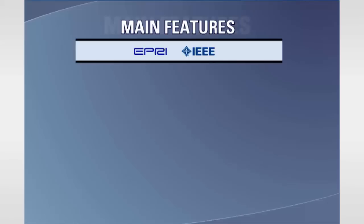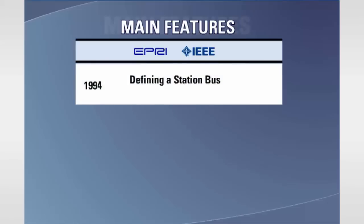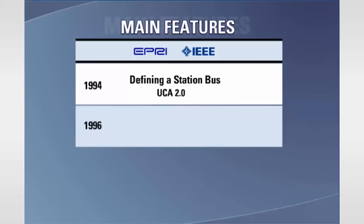From 1994 forward in North America, the EPRI and the IEEE started the task of defining a station bus. This new phase was called UCA 2.0. During 1996 in Europe, Technical Committee 57 began work on IEC 61850 with a focus similar to UCA 2.0. The UCA 2.0 substation bus peer-to-peer messaging service called GOOSE was specified. Several manufacturers, including GE Multilin, implemented the service and verified interoperability.